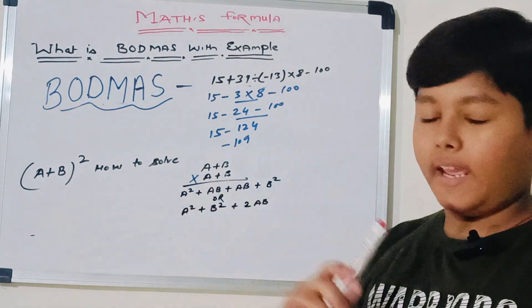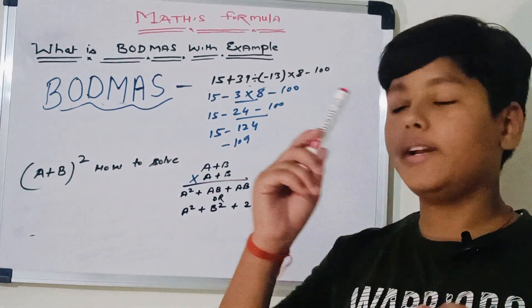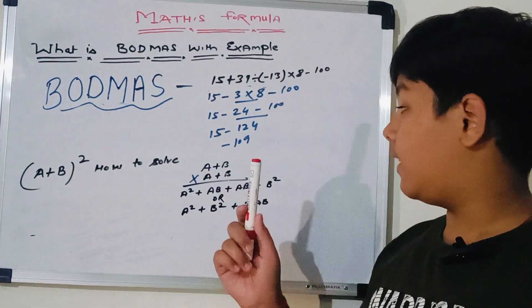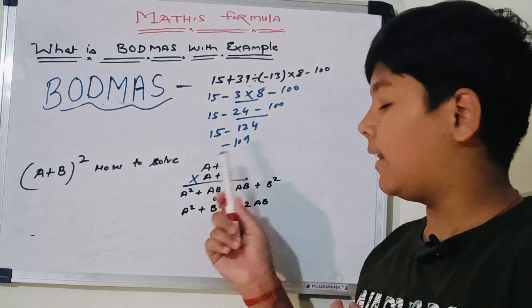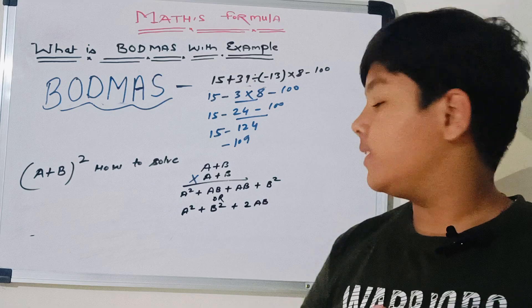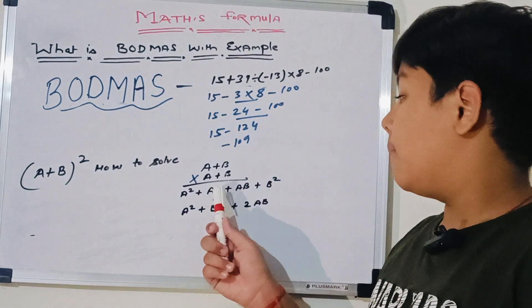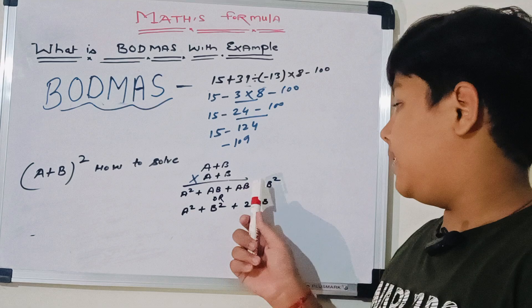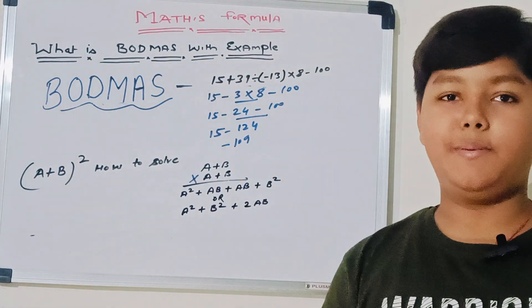A multiplied by a is equal to a square. A multiplied by b is equal to ab. Then let's do from b. So b multiplied by a is equal to ab. And then b multiplied by b is equal to b square. So it will be a square plus ab plus ab plus b square, or a square plus b square plus 2ab.